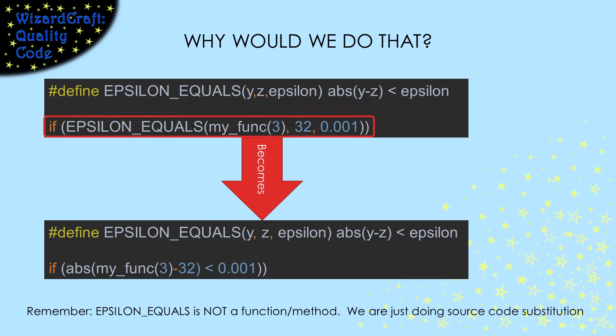In this if statement, I'm asking if my func of three is within one one-thousandth of 32. After the preprocessor runs, this is what the code will look like. If I have to make a lot of these comparisons, the pound-define makes the code easier to write and easier to read. However, it's really important to remember that epsilon equals is not a function. No function call is being made here.